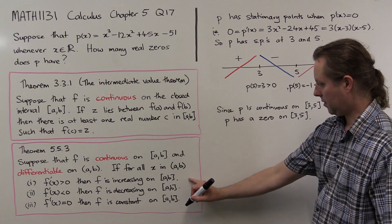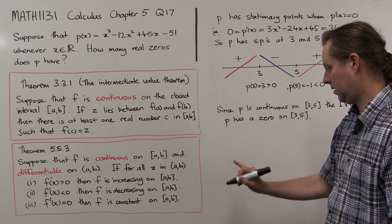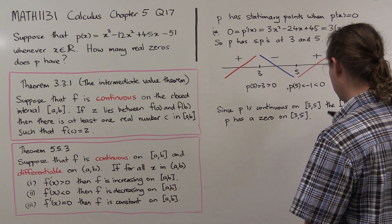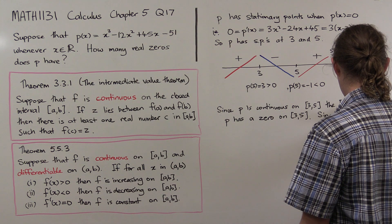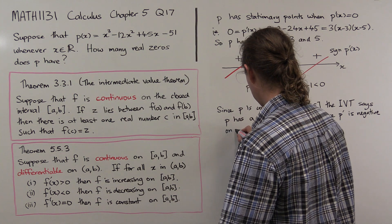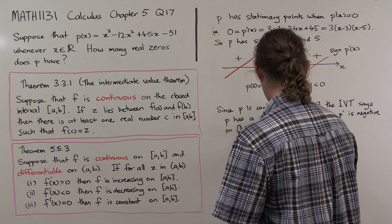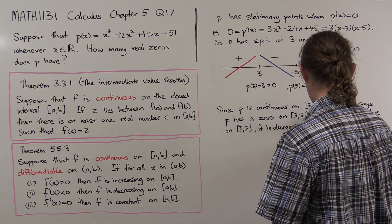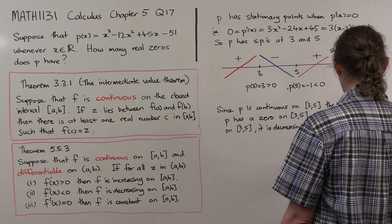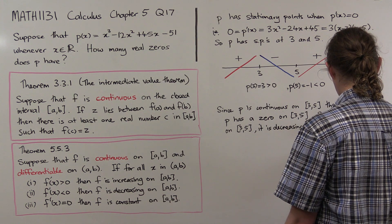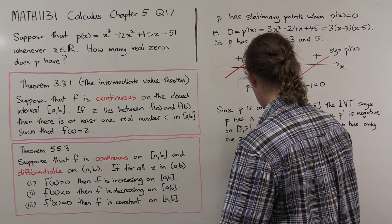Since P'(x) is negative on (3, 5), P is decreasing on that interval, and hence P has only one zero on [3, 5]. This is the typical approach: find an interval where you think there might be a zero, show there is one using IVT, then show there's only one using the derivative sign. You need to choose the interval correctly so both things are true.